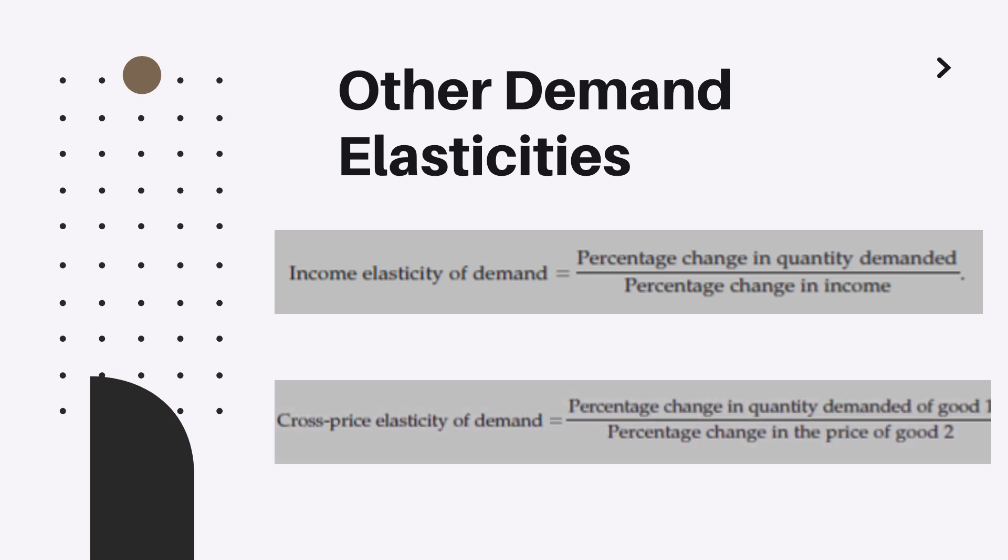Another example: cross price elasticity of demand, which shows the relation of two different products and their prices. And the formula is simple as percentage change in quantity demanded of good one divided by the percentage change in the price of good two.